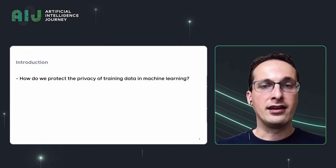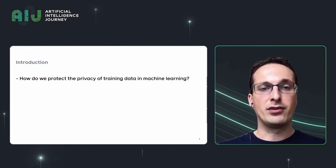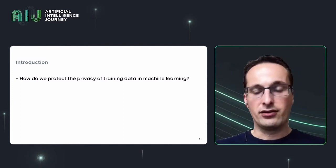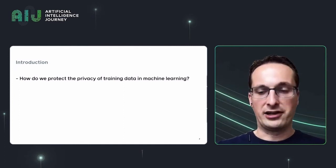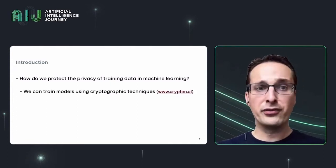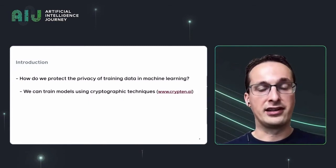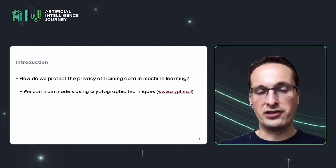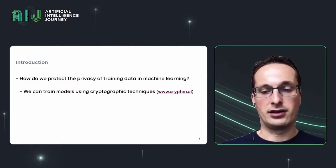The problem we're interested in is that in machine learning we often train models on training data that needs to remain private — that we don't want to leak to the world and need to treat confidentially. We're interested in how we can do this better. One direction is training models using cryptographic techniques like homomorphic encryption or secure multiparty computation. We've developed a platform called Krypten, which you can check out at Krypten.ai, but I'm not going to go into detail on Krypten today because I want to focus on two other topics.